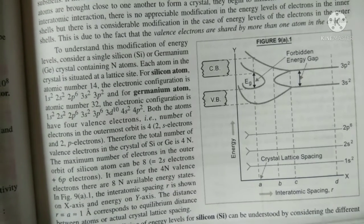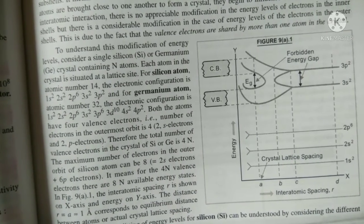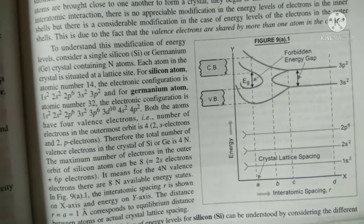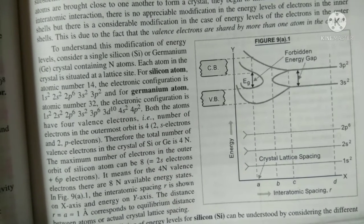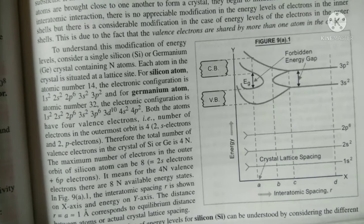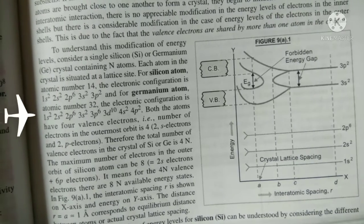So total number of valence electrons in the silicon crystal is 4N. It means for the 4N valence electrons, there are 8N available energy states.